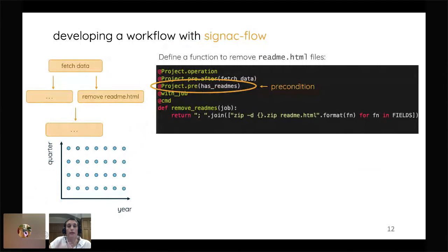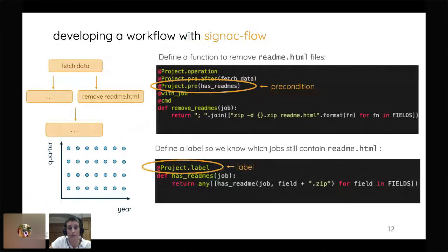So in order to go through and clean out these unnecessary files, we would set up a flow operation. So this function is a flow operation. The only thing that makes it special is that it has this project.operation decorator and it takes job as an argument. And then we also have these pre and post conditions, which is what sets this up in a flow diagram type structure. And so you can see that a precondition here is fetch data and another condition is has readmes. So this makes sure that this operation is only run if a readme exists. And the way that we find that is now as a function called has readmes, which is just a simple one-liner that checks to see if a readme exists in the file.